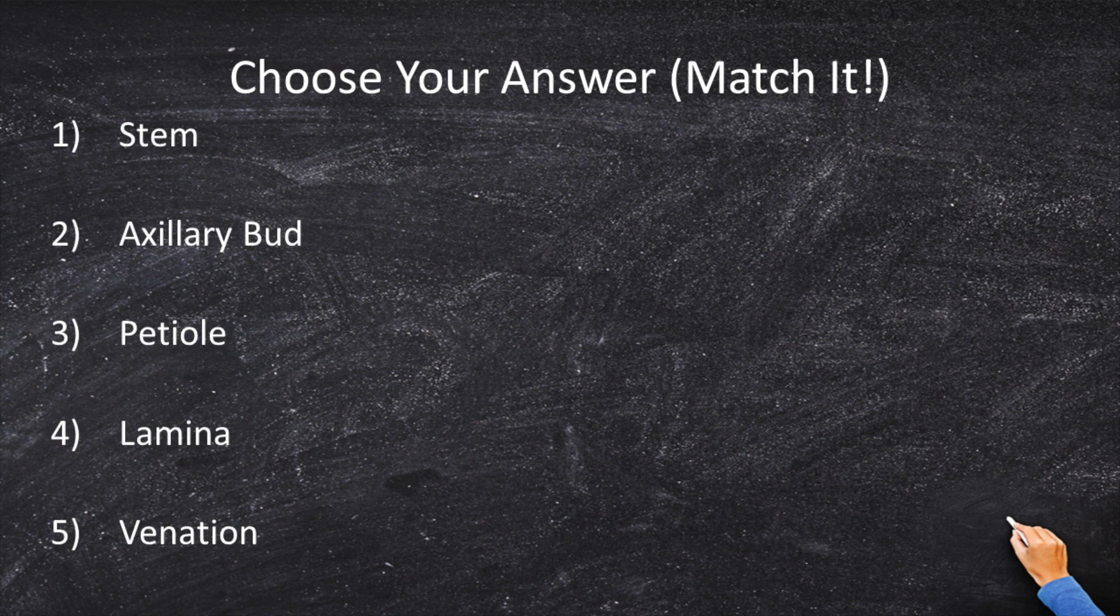All right, so connect it up. One is a stem. Two is an axillary bud. Three is a petiole. Four is a lamina. And five is a venation. That's all you have to do. Mix and match. And with that, we've concluded our second FS video for 2020.